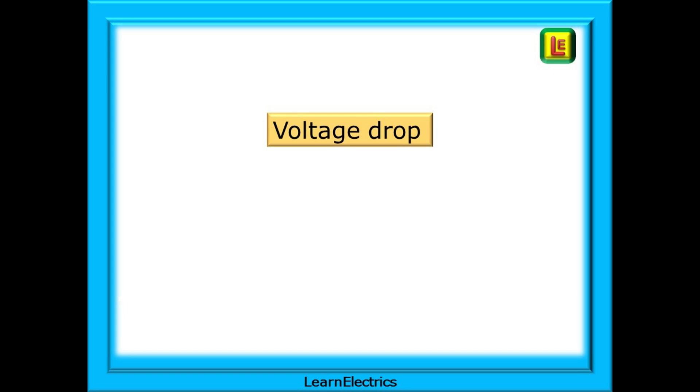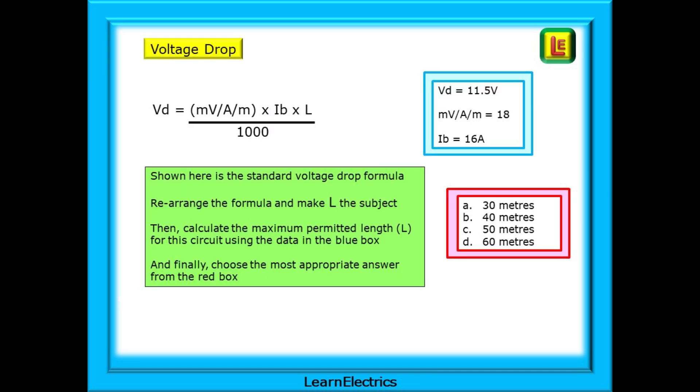And lastly, for these essential formulas, we can take a look at voltage drop in standard copper cables. Shown here is the standard voltage drop formula. You are required to rearrange the formula and make L the subject. Then, calculate the maximum permitted length L for this circuit using the data in the blue box. And finally, choose the most appropriate answer from the red box. Pause the video while you work through the task. Answers on the next slide.